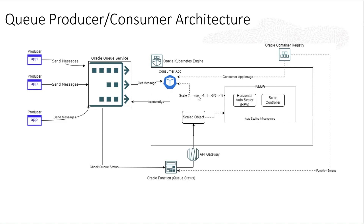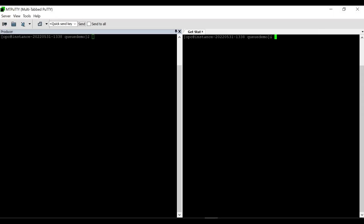Once the number of messages starts going down, KEDA starts scaling down the consumers as well. Our consumer app image is hosted in the Oracle Container Registry, and same for the Oracle Function. We will see the producer-consumer demo in action — how consumers scale up, how they match the speed of the producer, and how the get state API works.